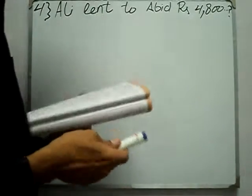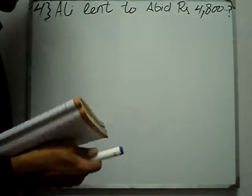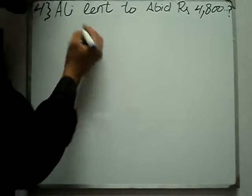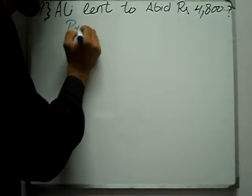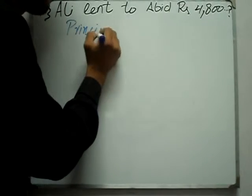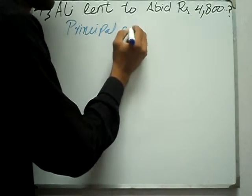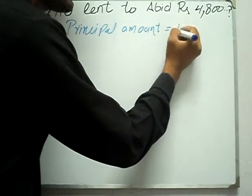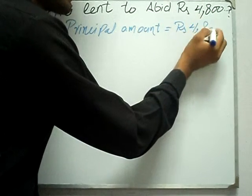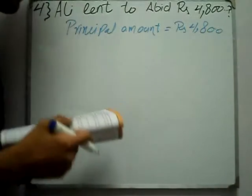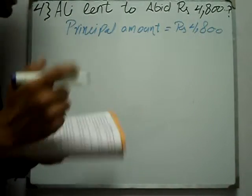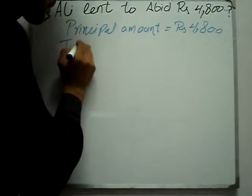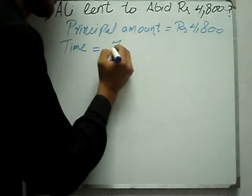Profit ka rate find karna hai. Principal amount kitni di — Ali ne Abid ko jo lent ki. Humare paas principal amount RS 4800 hai. Jo lent hogi amount hogi, woh principal amount hai. Time kya hai? 7 months.